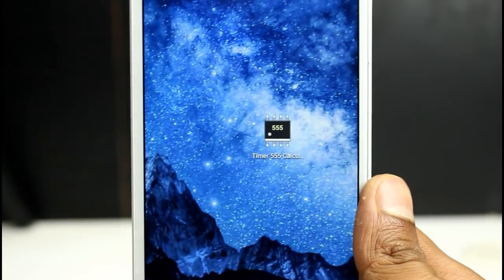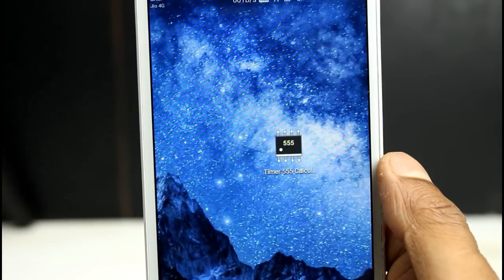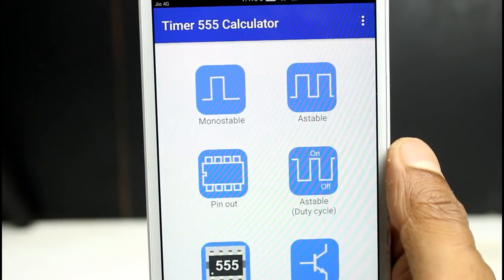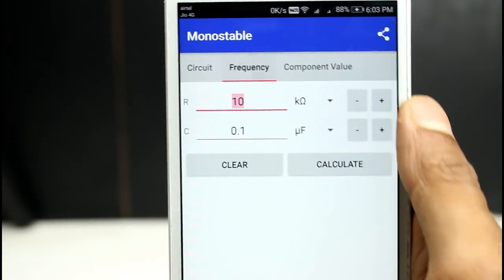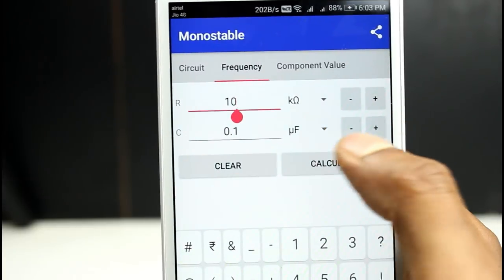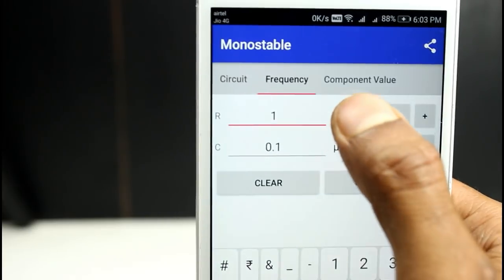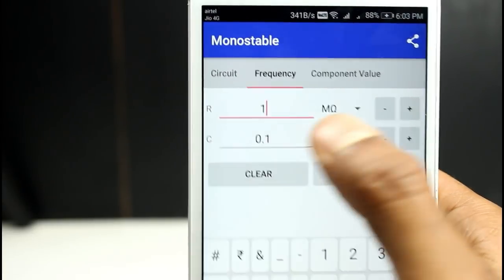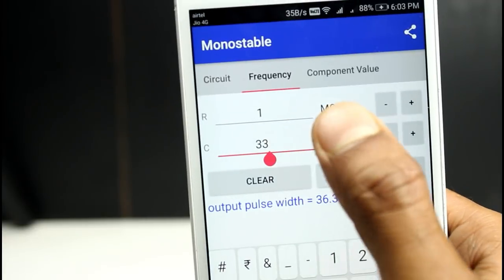Now open the app, click on monostable mode, then click on frequency. Here you can change the resistor and the capacitor and you will get your desired time. Here I set it to 1 megaohm and the capacitor rating is 33 microfarad, so you can get 36 seconds.